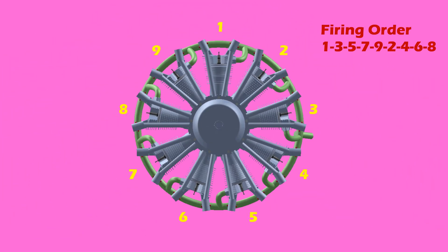The firing order of a 9-cylinder radial engine will be 1-3-5-7-9-2-4-6-8.